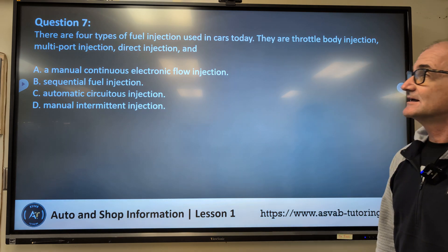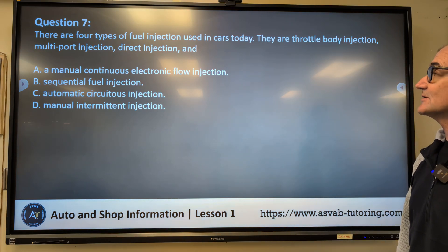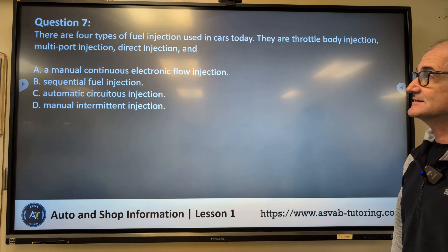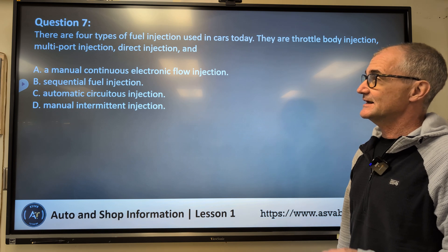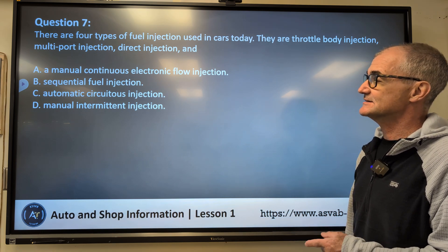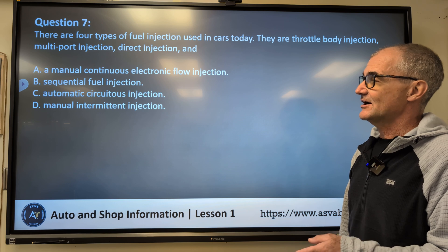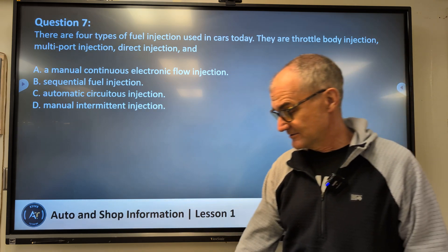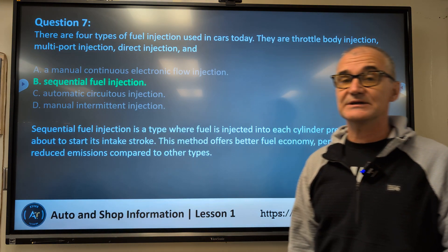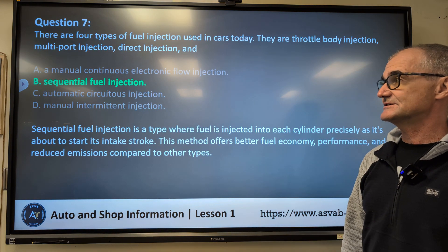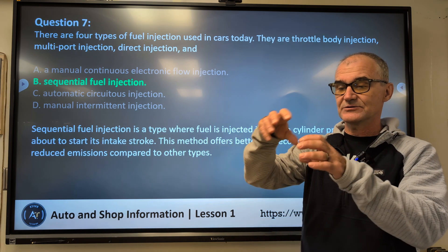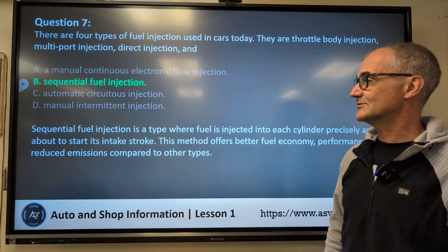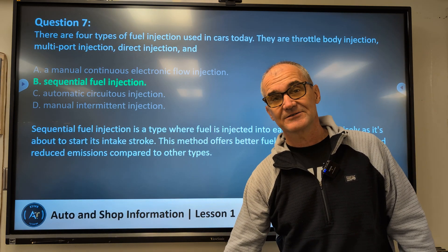Question number seven: There are four types of fuel injection used in cars today. They are — A, throttle body injection, multi-port injection, direct injection, and manual continuous electronic flow injection; B, sequential fuel injection; C, automatic circuitous injection; D, manual intermittent injection. Correct answer is B — sequential fuel injection. Sequential means in order, so as one cylinder gets injected and fires, then the next, then the next. A lot of this is really just vocabulary.